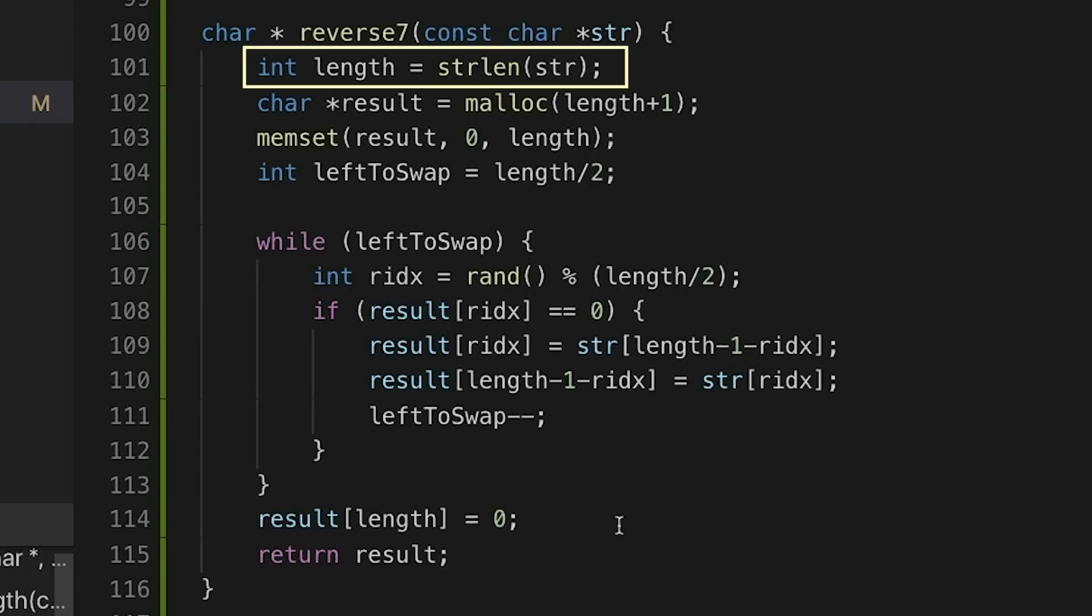So specifically, we get the length of the string, we allocate space for the new string, then we set all the characters in the new string to zero. That's very important because that's going to help us see when a character hasn't been reversed yet. Then we get the number of characters that we need to swap. And then each time through the loop, we first get a random index between zero and length divided by two minus one.